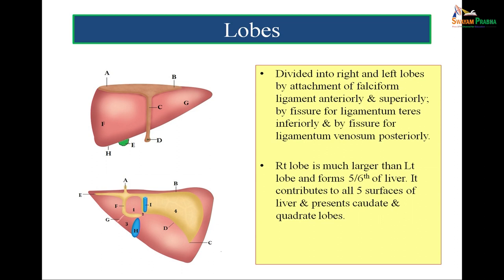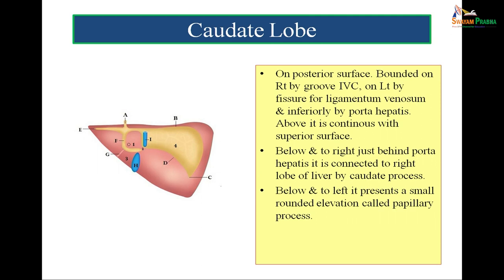The right lobe of liver is much larger than the left lobe and forms five-sixths of the liver. It contributes to all five surfaces of the liver and presents the caudate and quadrate lobes. The caudate lobe lies on the posterior surface of the right lobe. It is bounded on the right side by the groove for inferior vena cava (marked I) and on the left by the fissure for ligamentum venosum (marked F). Inferiorly there is the porta hepatis and above it is continuous with the superior space. Below and to the right, just behind porta hepatis, it is connected to the right lobe of liver by the caudate process, marked as 2 in the figure.